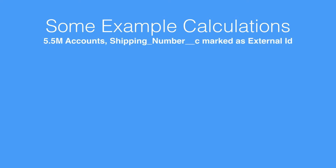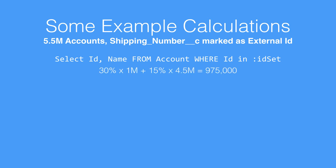Let's go through some example calculations to see how this works. If we have an org with 5.5 million accounts, and we've also got a custom field called Shipping Number which we've marked as an external ID, and we run our query — select ID and name from account where the ID is in a particular set of IDs — we can work out that it's going to be selective. We retrieve 30% of the first 1 million records, so that's 300,000, and then for the remaining 4.5 million records in that table, we are allowed to retrieve 15% of them, which is another 675,000, giving us a grand total of 975,000 records. So that filter is selective because it's less than 1 million.